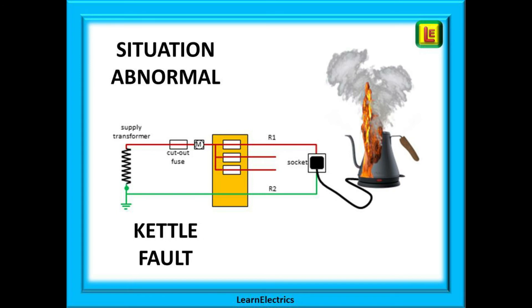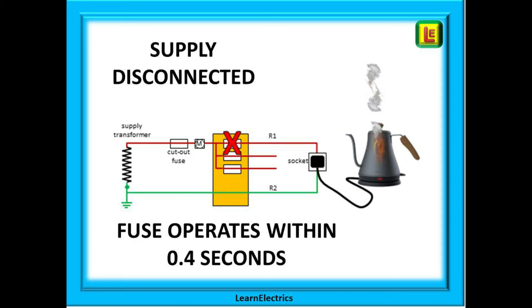If we now change this scenario and suppose that the kettle has developed a fault and we are not aware of this. When we switch the kettle on. Bang! There is a massive fault. Smoke pours out of the kettle and the metal casing of the kettle is suddenly energized with 230 volts. If you are touching the kettle at this time you may receive an electric shock. And then just as suddenly it is all over.